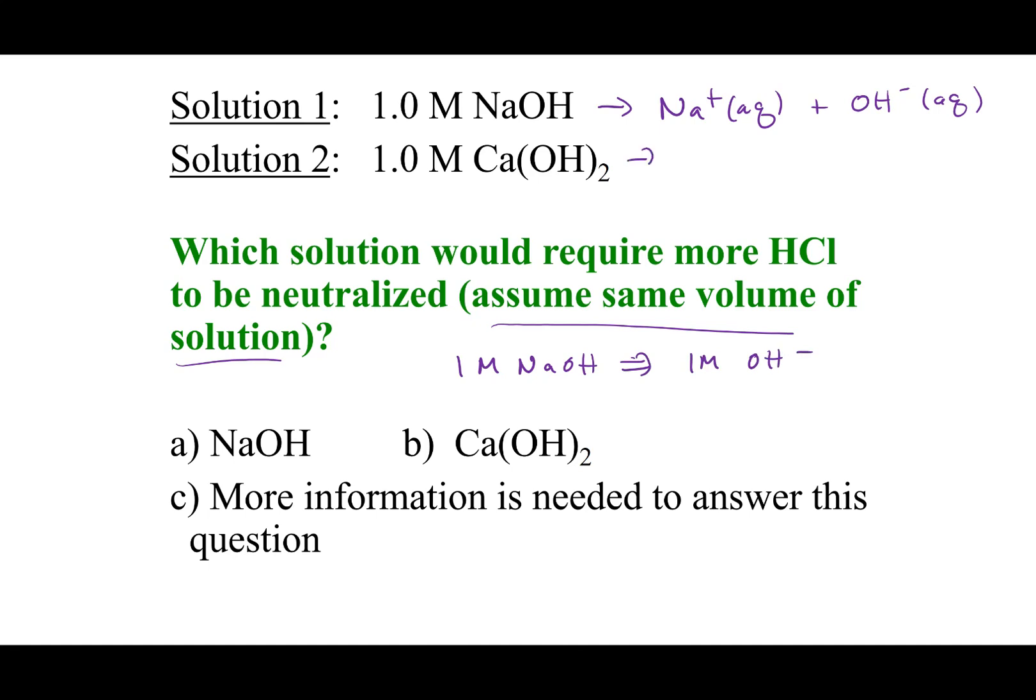Now, if I look at calcium hydroxide, I get Ca2 plus aqueous plus 2 OH minus aqueous. So this is a dibasic compound. So what that means is that a one molar solution of calcium hydroxide really is 2 molar in OH minus.